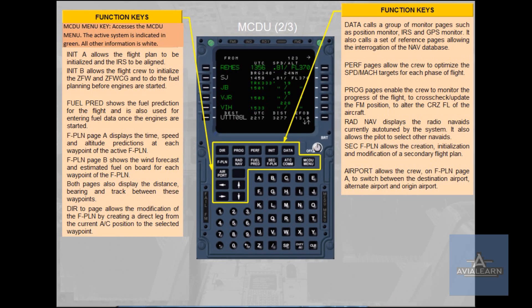The Function Keys: MCDU menu key accesses the MCDU menu; the active system is indicated in green, all other information is white. Init A allows the flight plan to be initialized and the inertial reference system to be aligned. Init B allows the flight crew to initialize the zero-fuel weight and zero-fuel weight center of gravity, and to do the fuel planning before engines are started. Fuel PRED shows the fuel prediction for the flight and is also used for entering fuel data once the engines are started. Flight Plan page A displays the time, speed and altitude predictions at each waypoint of the active flight plan. Flight Plan page B shows the wind forecast and estimated fuel on board for each waypoint, and both pages also display the distance, bearing and track between waypoints.